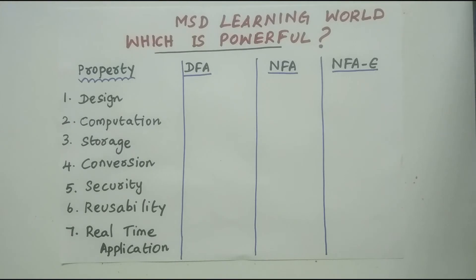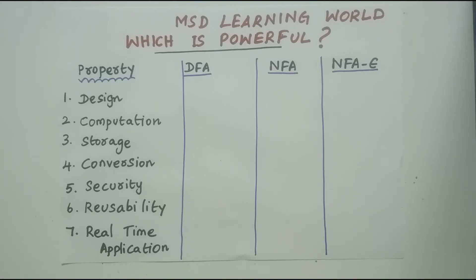Let us see each property and determine which machine is more powerful under each one. Coming to property number one — Design — this is fully based on the user's point of view. From the user's perspective, the user can easily design an automata for any regular expression using NFA-epsilon.